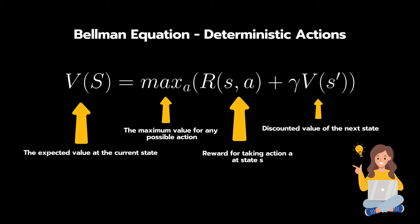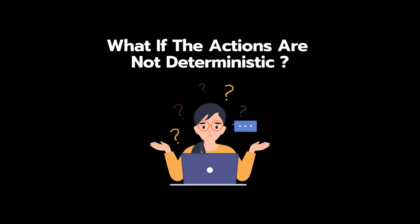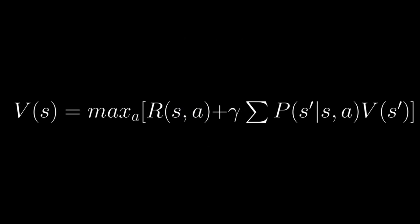let's talk about what happens when actions are not deterministic. Here we have the Bellman equation for calculating the value of a state but this time we assume our actions are probabilistic.